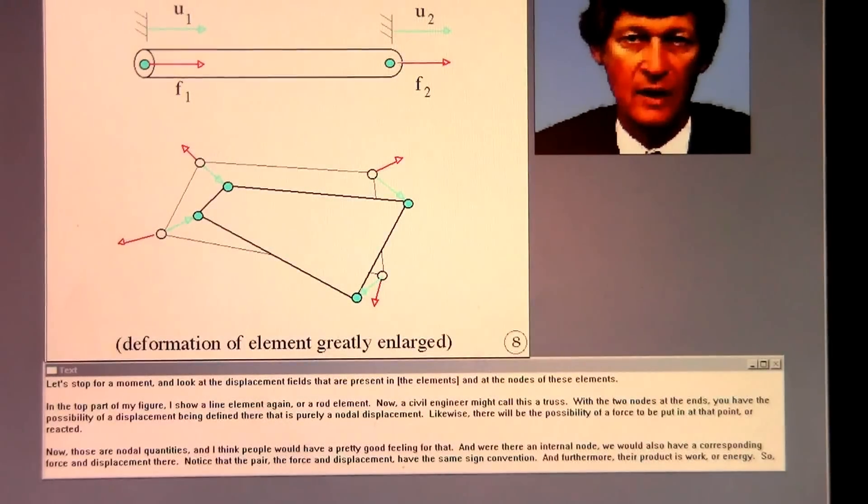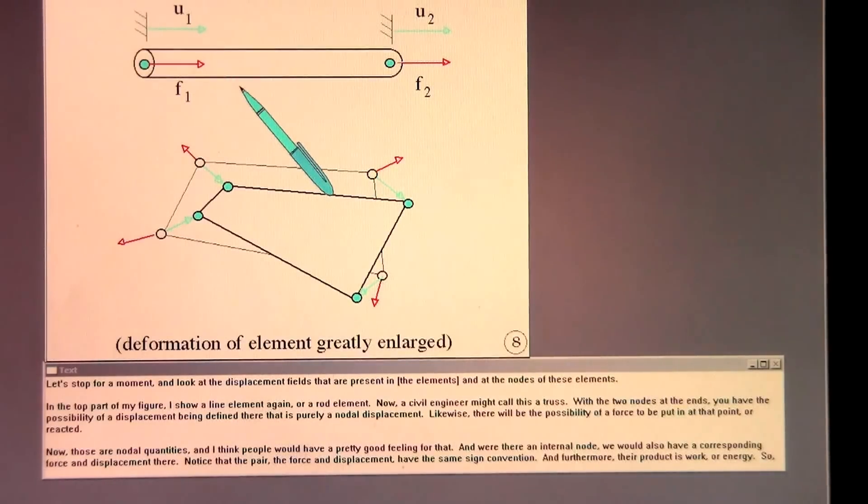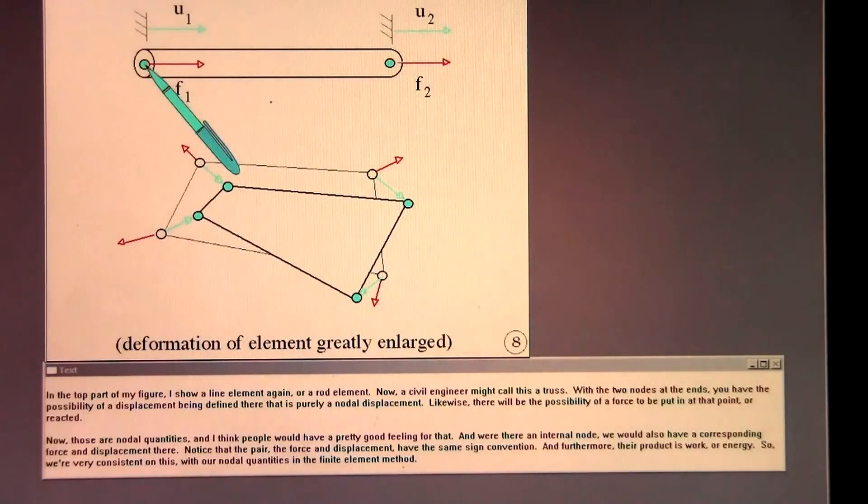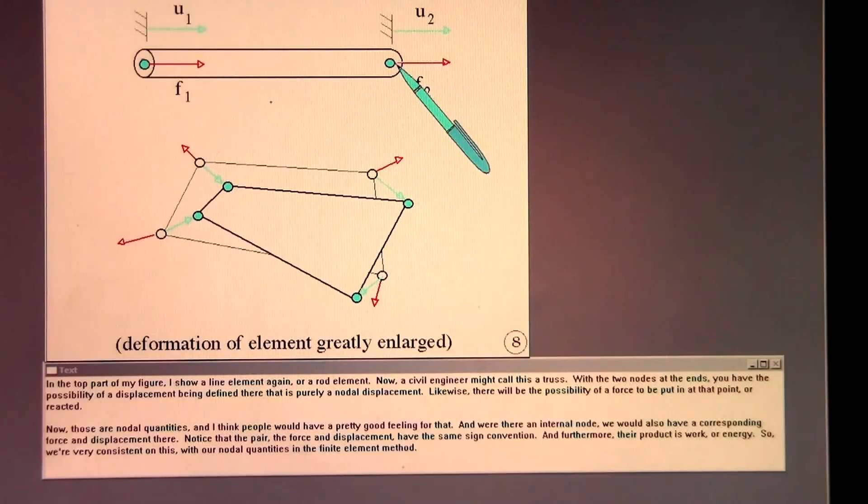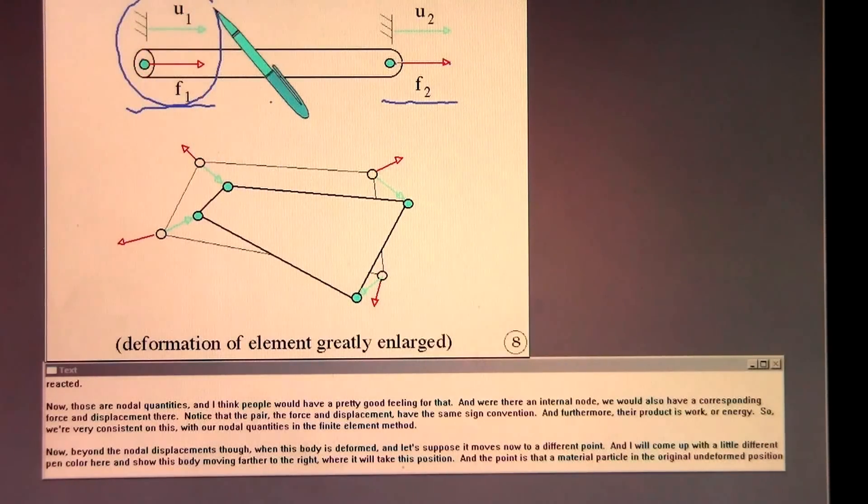Let's stop for a moment and look at the displacement fields that are present in and at the nodes of these elements. In the top part of my figure, I show a line element again, or a rod element. A civil engineer might call this a truss. With the two nodes at the ends, you have the possibility of a displacement being defined there that is purely a nodal displacement. Likewise, there will be the possibility of a force to be put in at that point, or reacted. Those are nodal quantities, and I think people would have a pretty good feeling for that. Notice that the pair, the force and displacement, have the same sign convention. And furthermore, their product is work, or energy. So we're very consistent with our nodal quantities in the finite element method.